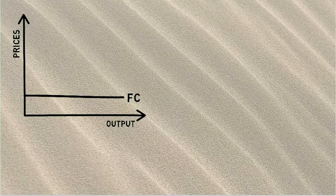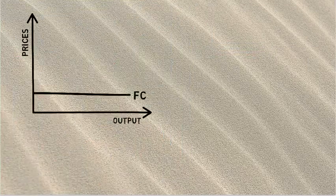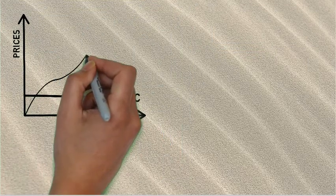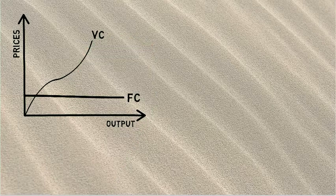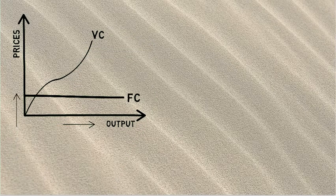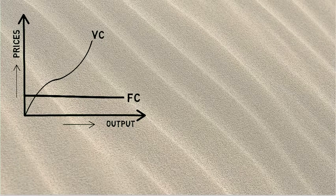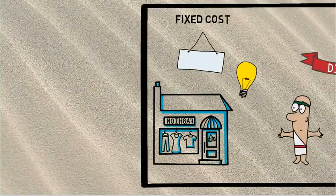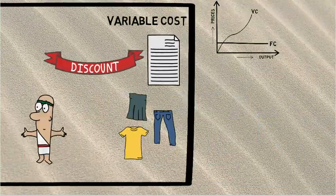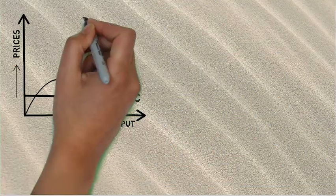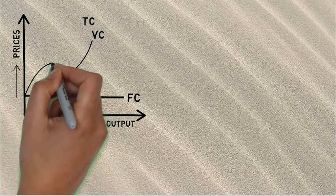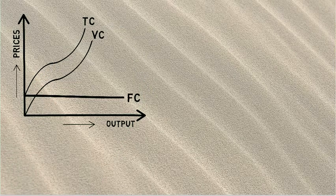On the other hand, Variable Costs is changing in nature. Hence, the curve will be an upward sloping curve which showcases change in cost. Notice, that to increase output, we need to increase our cost as well. As we know, that Total Cost is Total Fixed Cost plus Total Variable Cost. Hence, we need to start our Total Cost curve from the place our Fixed Costs started.